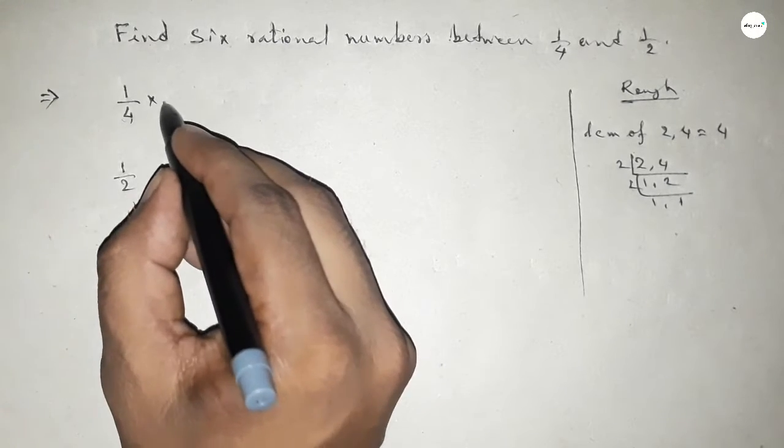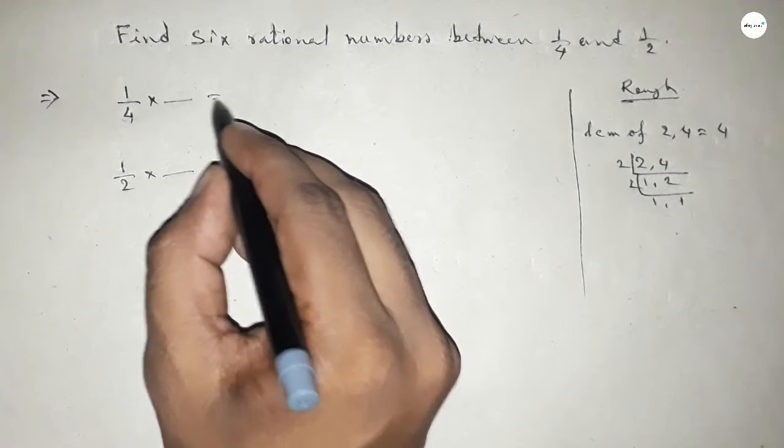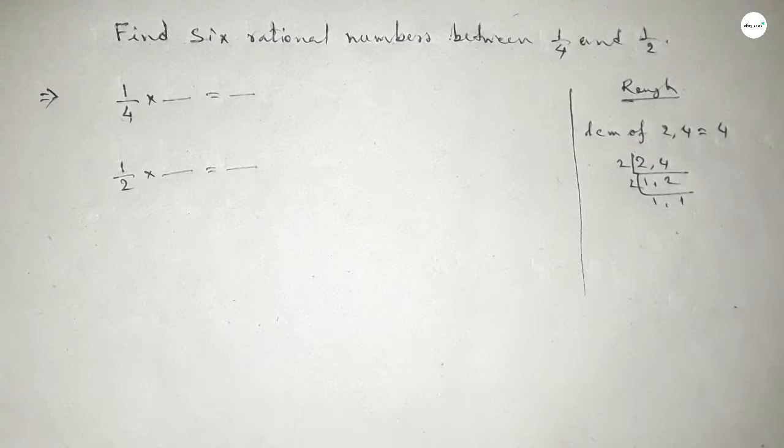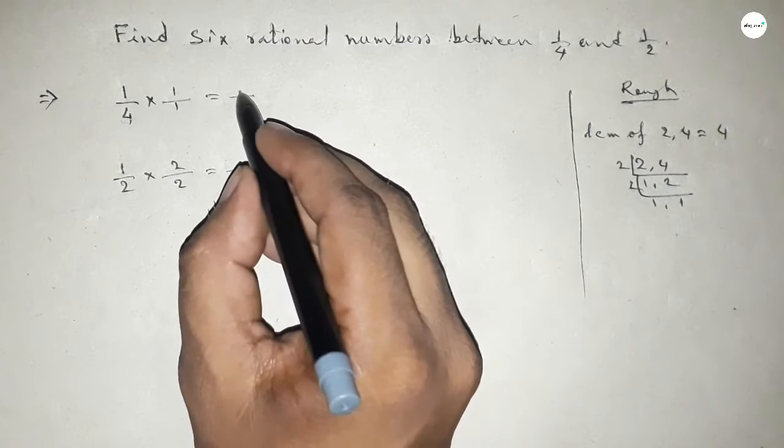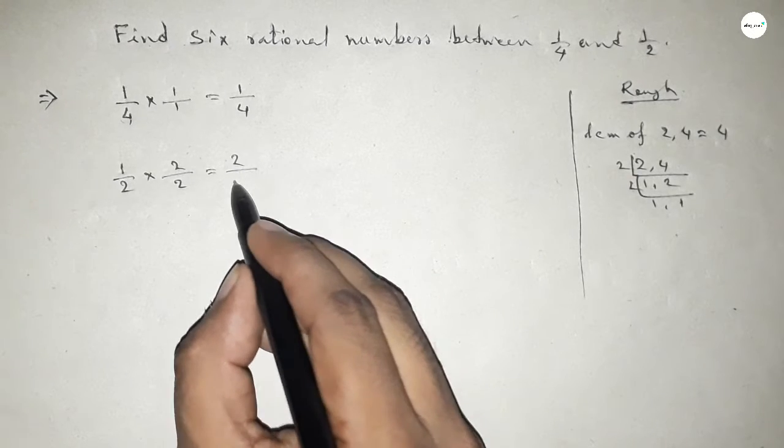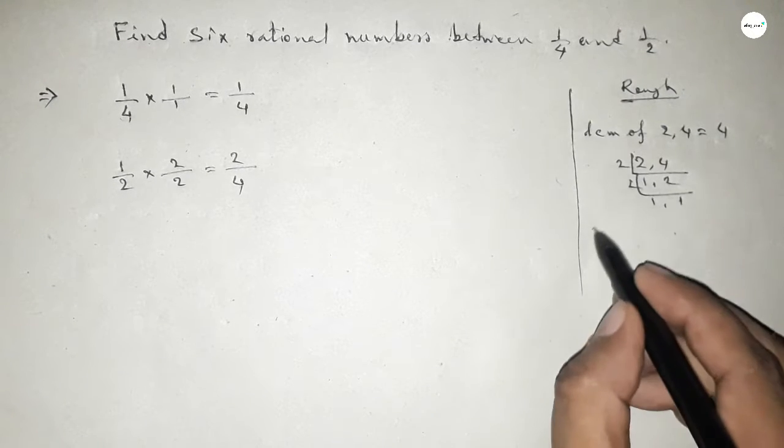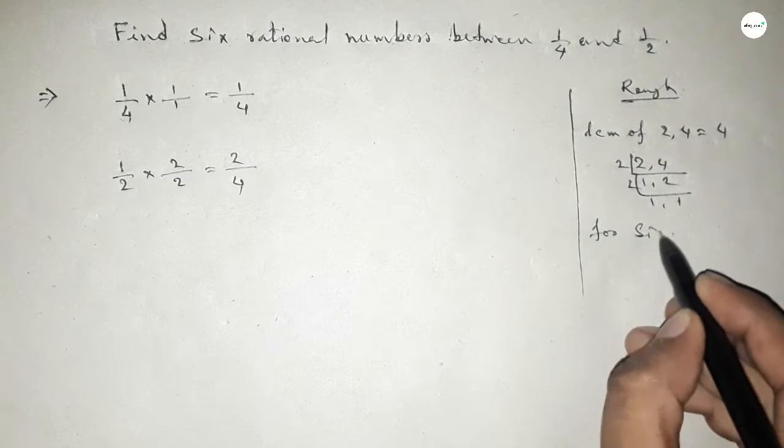Now what should be multiplying here and here to get denominator 4? If you put here 1 and here 2 up and down, then this is 1 over 4 and this is 2 over 4.